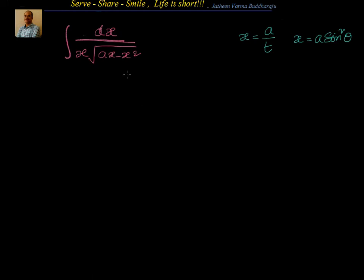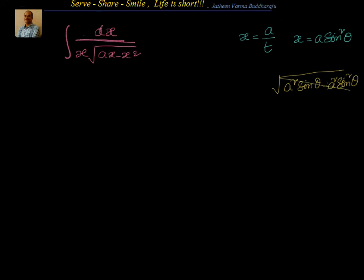First of all, why can't we take x equal to a sine theta? Why are we taking only a sine square theta? If I take x equal to a sine theta, I will have in the square root a times a sine theta, that is a squared sine theta minus a squared sine square theta. But if you take x out, you can't remove that square root — there is no option. But if I take x equal to a sine square theta, it will simplify.